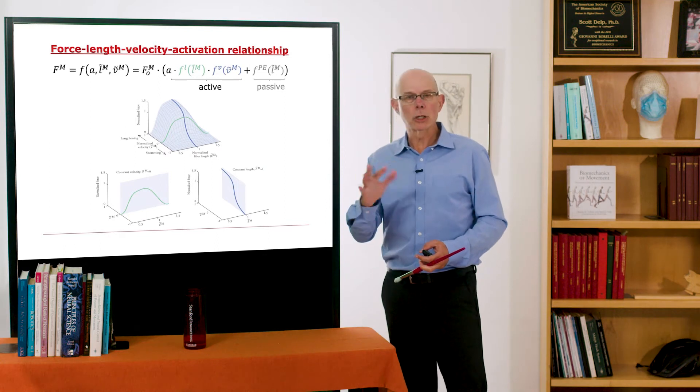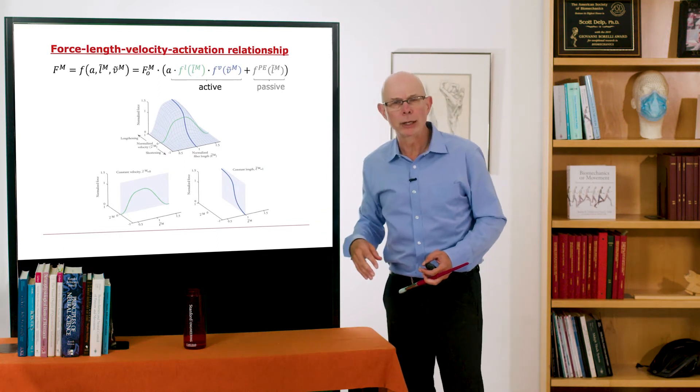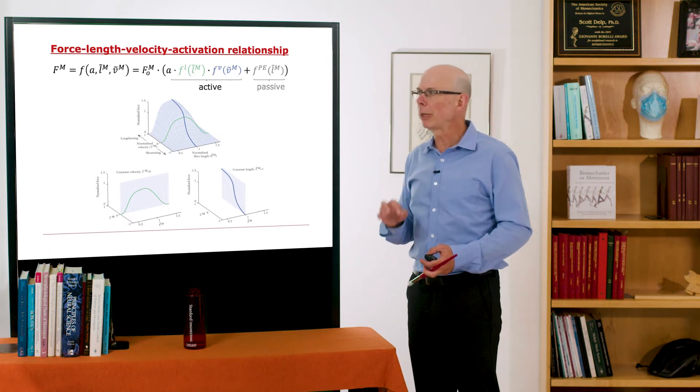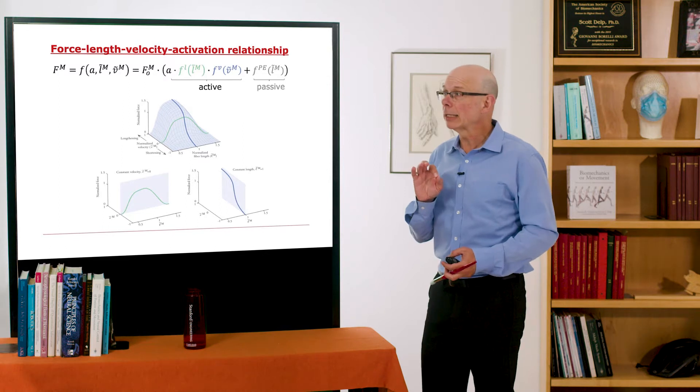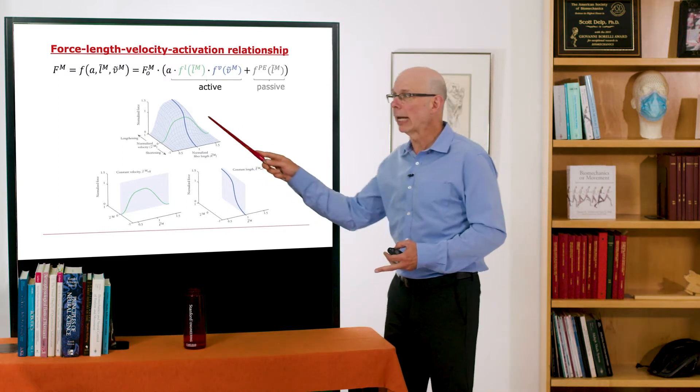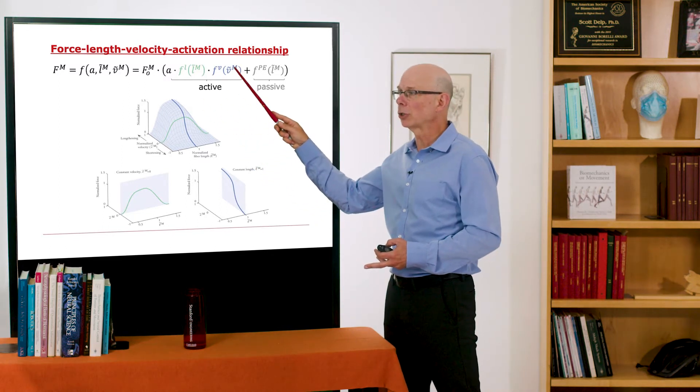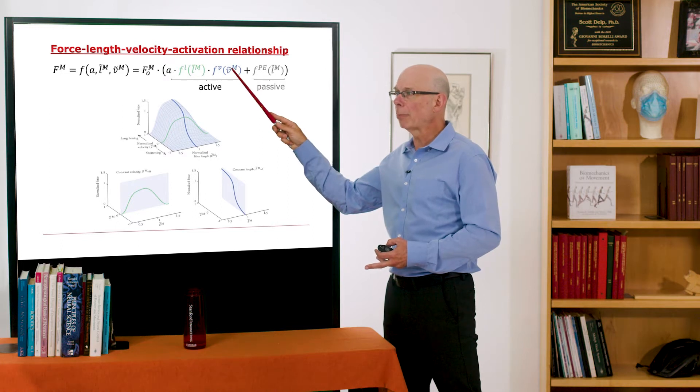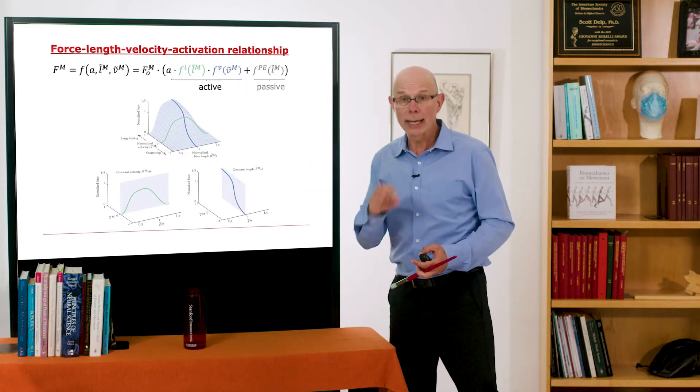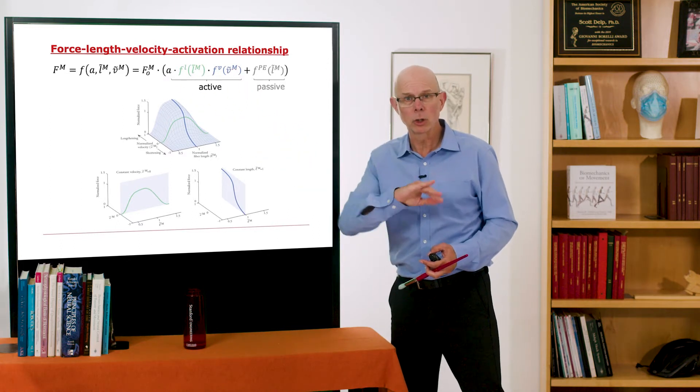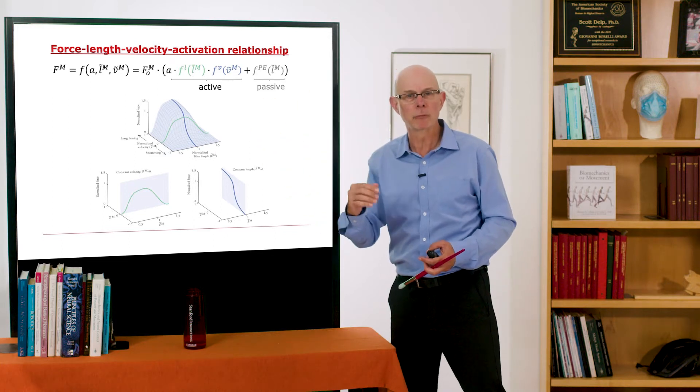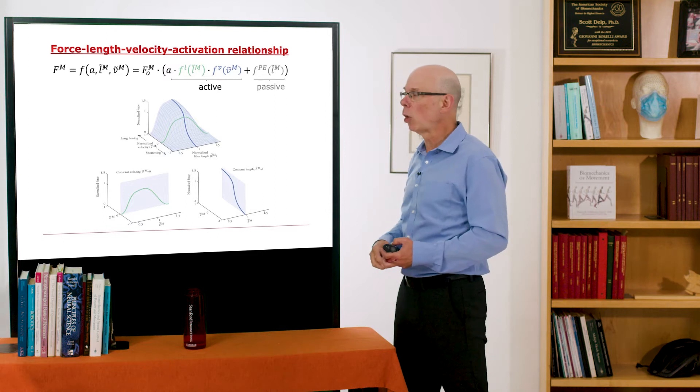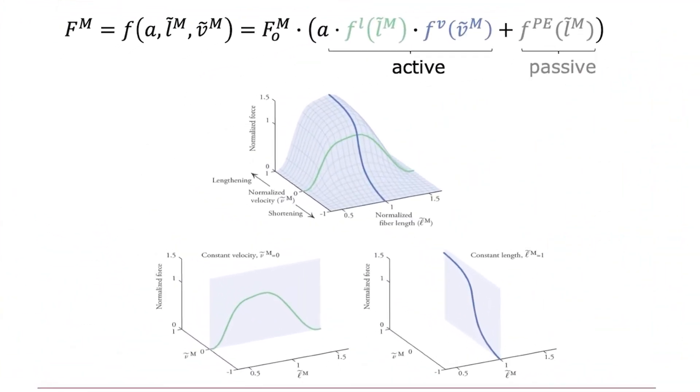So what does this look like in 3D? So far we've been looking at these 2D curves, but it's really a 3D curve. So, let's take the example, here's the force length velocity activation relationship. And let's take the example where activation is 1. That's what we've been assuming so far. We'd look at our force length curve, our force velocity curve. These are maximum forces, so activation is 1.